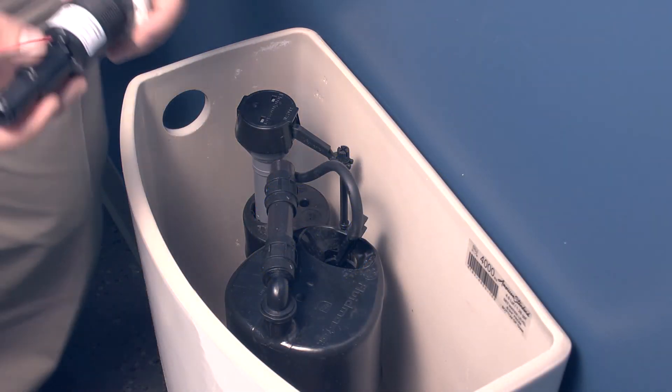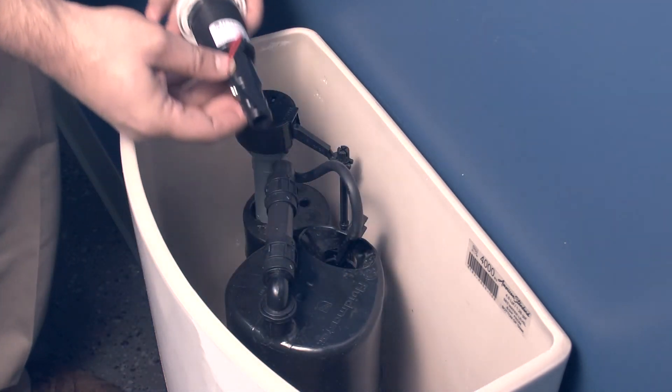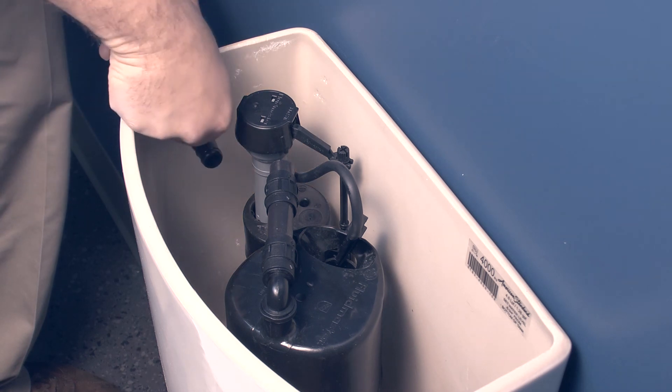The actuator comes pre-assembled. Remove the nut and shim, then insert the new actuator body through the tank wall. Note, no sealant required.